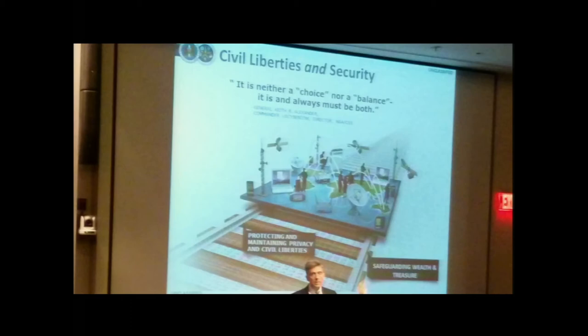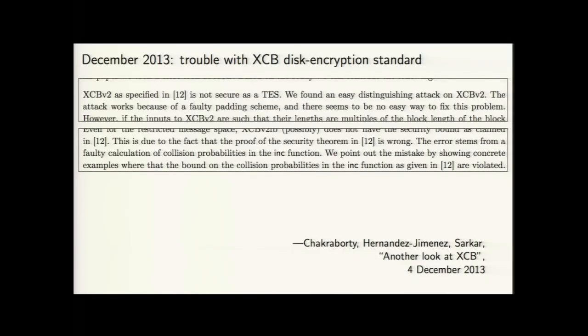President Obama's personally-picked NSA review panel released its transparency report — a 300-page document. One interesting paragraph near the end, about cryptographic vulnerabilities, is full of weasel words. It reads: 'Upon review, we are unaware of any vulnerability created by the US government in generally available commercial software that puts users at risk of criminal hackers or foreign governments decrypting their data.' The phrase 'under this program' is the only thing missing.